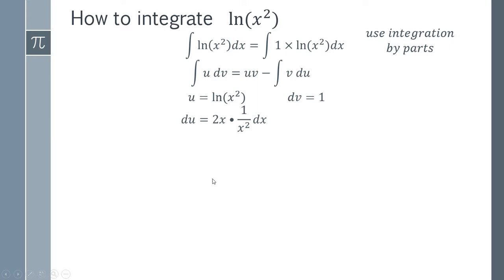That's what we get here. When we multiply these two together there's obviously going to be a cancellation. This x and this x² are going to cancel out, so we can say that du is simply 2 over x dx. We've got dv equals 1, integrate both sides and we get v equals x.